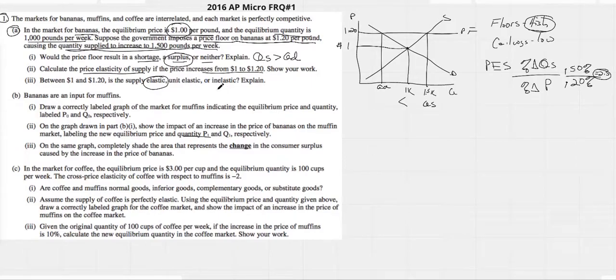Remember, inelastic is anything less than 1, or between 0 and 1 is a better way to say it. Unit elastic is 1, and elastic is any PES value that is greater than 1. So, greater than 1 would be elastic, and that's where we're at.